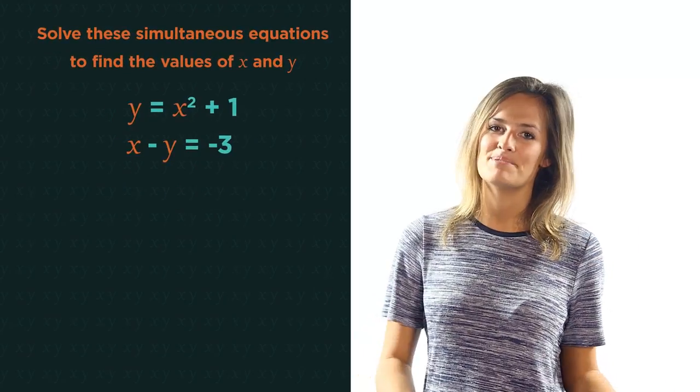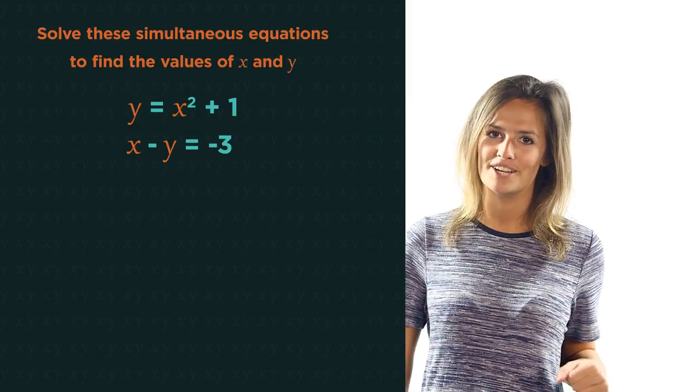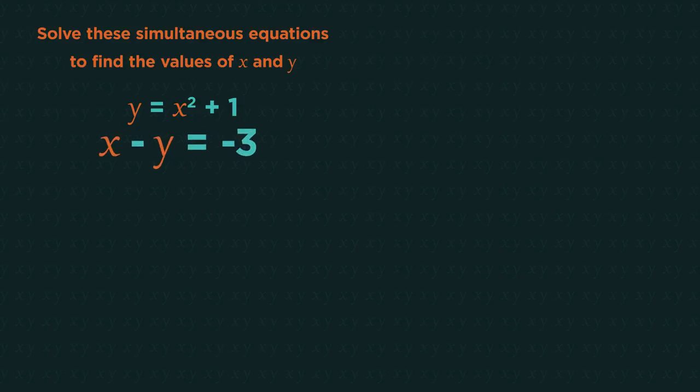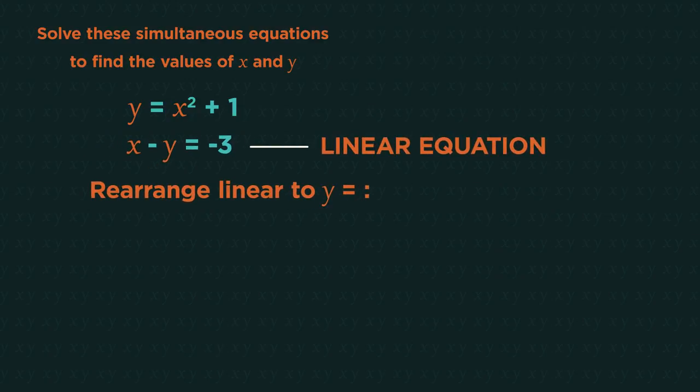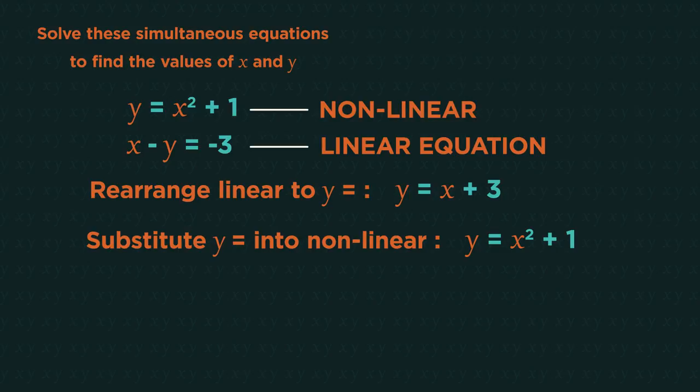So let's look at an example of how to solve simultaneous equations by substitution. Start by rearranging the linear equation to become y equals. So y equals x plus 3. We can now substitute this y equals into the non-linear equation. So in place of the y we write x plus 3 equals x squared plus 1.